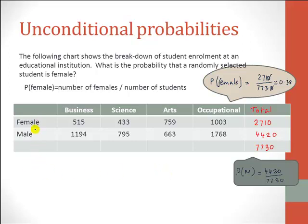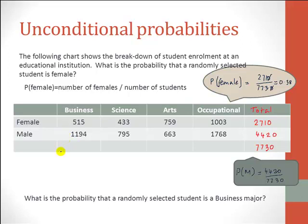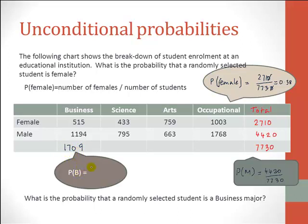In this two-way classification chart, we had classification by gender and we worked out the corresponding probabilities. The other classification category was by major — we have four broad majors offered at this institution. With two gender categories and four major categories, there are a total of four additional unconditional probabilities that come right out of this chart. For example, we could ask: what is the probability that a randomly selected student is a business major? That would be the total number of business majors divided by the total number of students. Working out the total number of business majors gives 1709, so the probability that a student is majoring in business is 1709 divided by 7730.